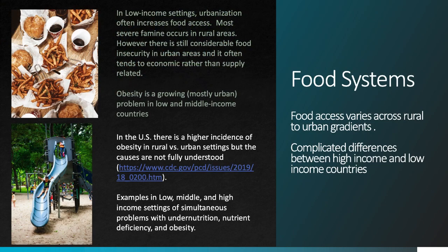You wouldn't necessarily think that food systems would change with urbanization, but in fact food and urbanization are deeply linked. Food access, especially in low-income settings, varies considerably from rural to urban, and in general food access is higher in urban areas. When you read or watch information about a large famine somewhere in the world, it's most likely in a rural setting where food supply or distribution has been disrupted. In urban areas, there tends to be a more consistent food supply, and when food insecurity occurs, it tends to be related more to economic access issues than to supply issues.